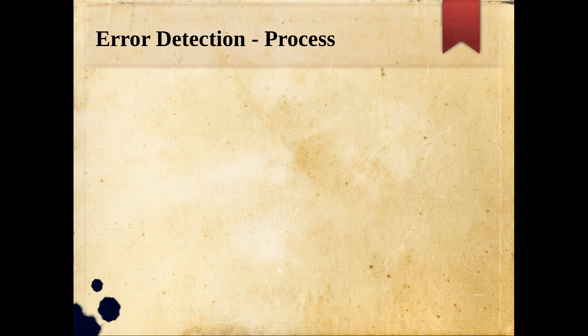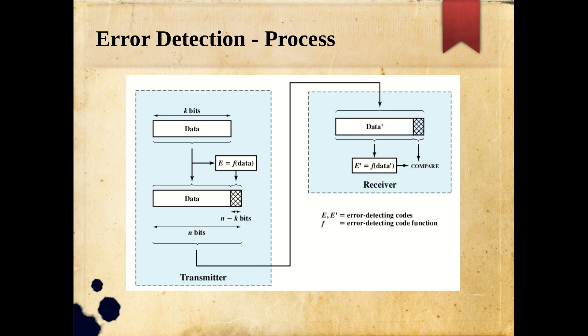Let me explain the error detection process with a diagram taken from the Stallings textbook. We have data to be communicated to the receiver — say it is a block of k bits. You divide the total information into k-bit units, and for each k-bit unit you pass those k bits through some kind of function to produce error detection information. Different techniques like parity and CRC use different functions.